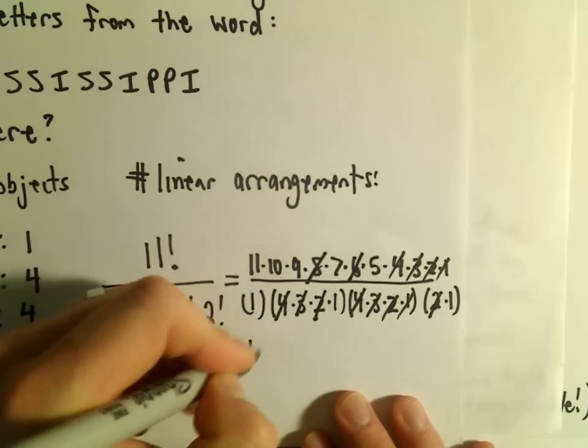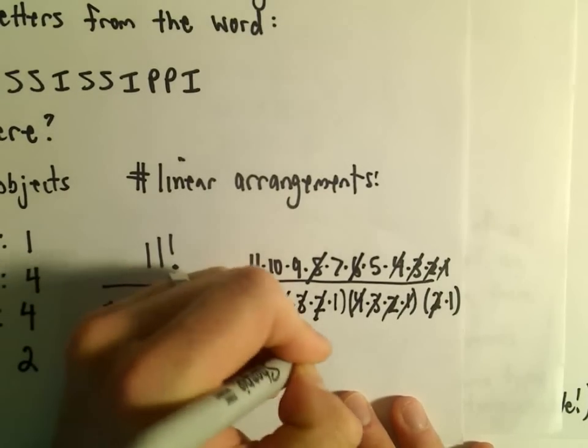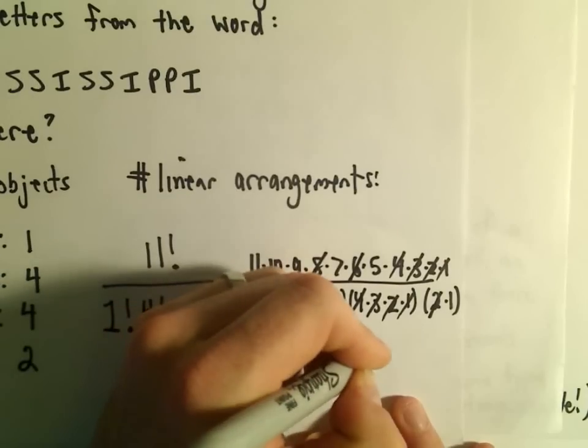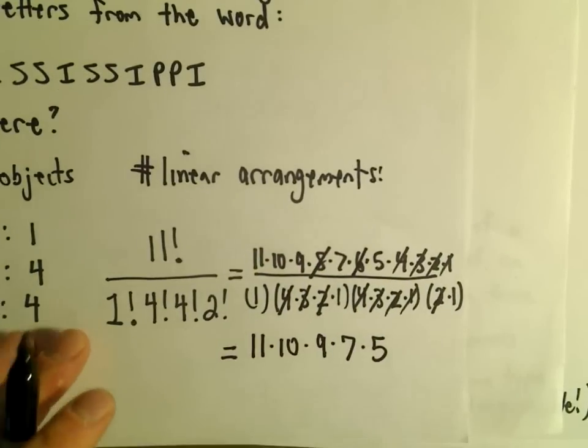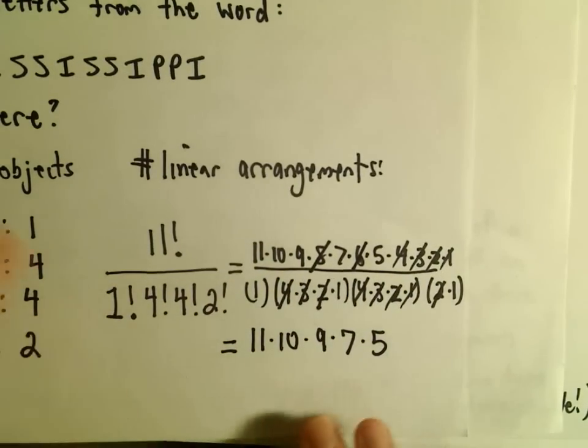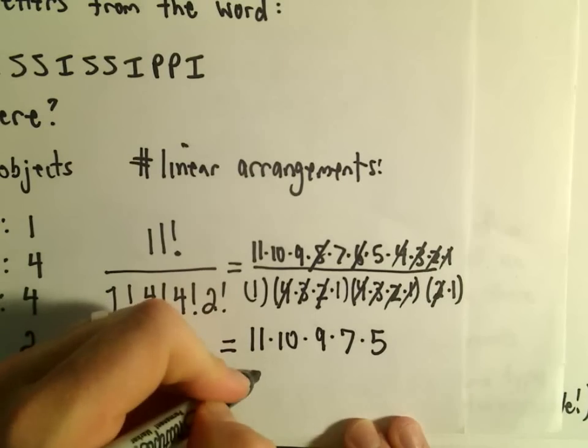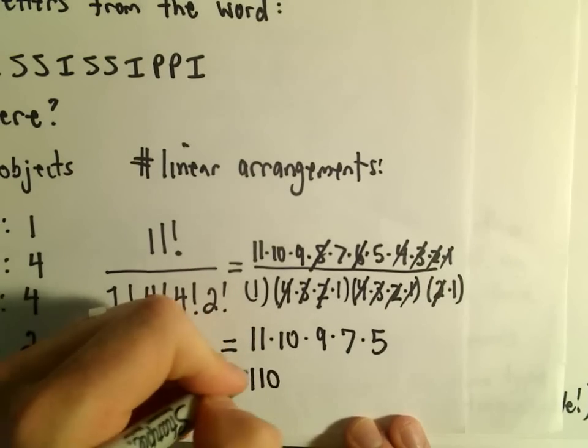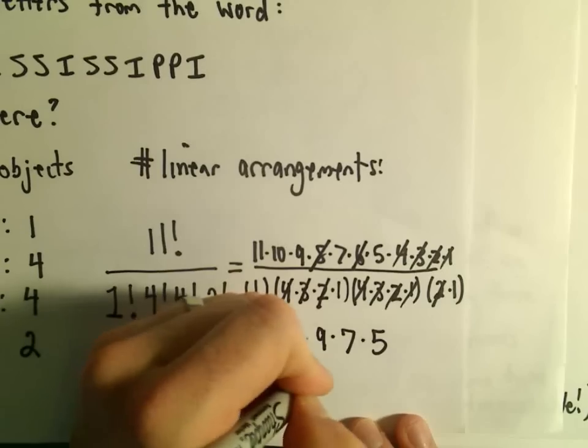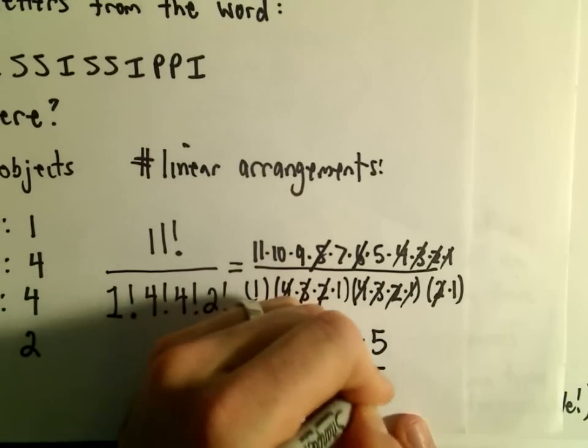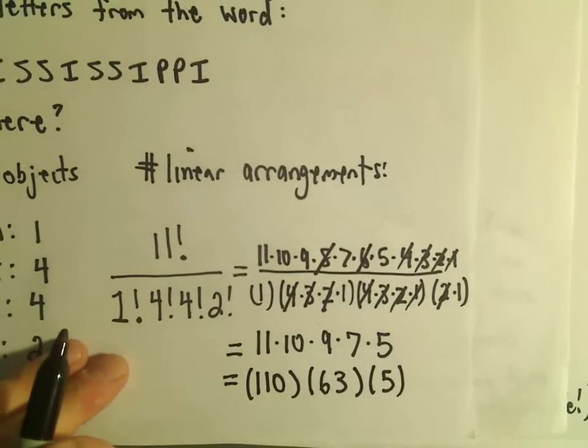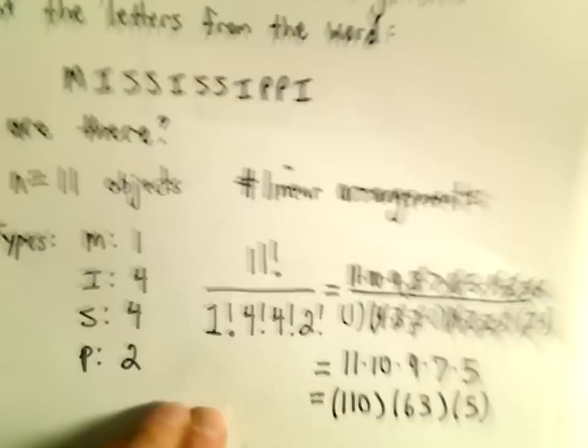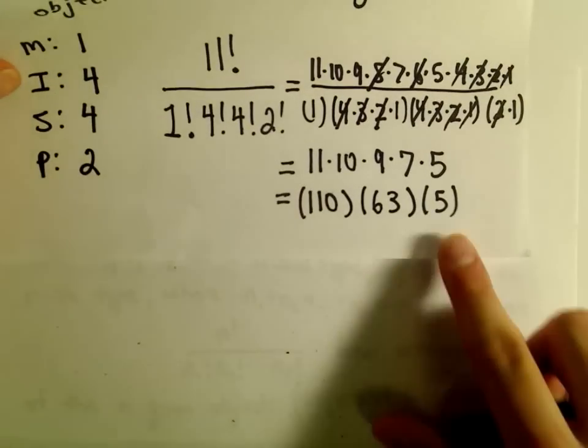So it looks like we're left with 11 times 10 times 9 times 7 times 5. Let's see here, so 11 times 10, that would be 110. 9 times 7, that's 63, and then times 5. I think we're almost there. Let's see, 110 times 63.